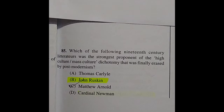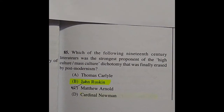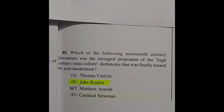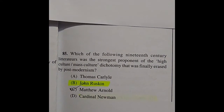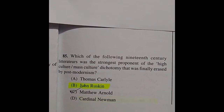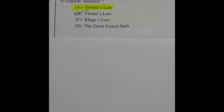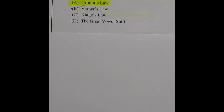Question 85: Which of the following 19th-century literatures was the strongest proponent of the high culture/mass culture dichotomy that was finally erased by postmodernism? The right answer is option B: John Ruskin.